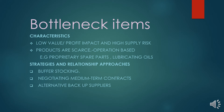So what strategies and relationship approaches are needed? Maintaining a buffer stock — stocking critical spare parts so that when one breaks down another is readily available. You can also negotiate medium-term contracts with suppliers so items are delivered at specific regular intervals. Additionally, having alternative backup suppliers ensures delivery if a primary supplier's stock is exhausted.